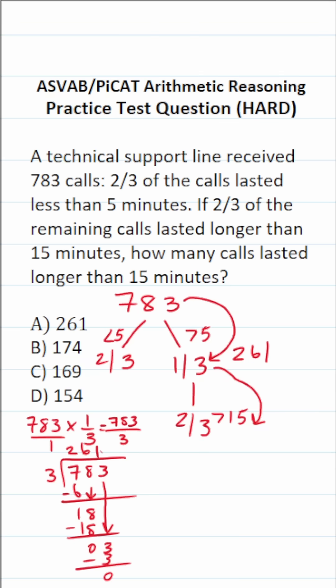And of those calls, two-thirds of them went beyond 15 minutes. So now we've got to figure out what two-thirds of 261 is, so we're going to multiply this by two-thirds.